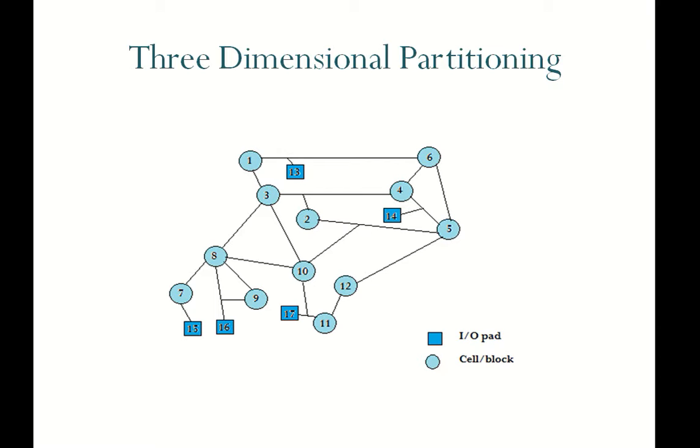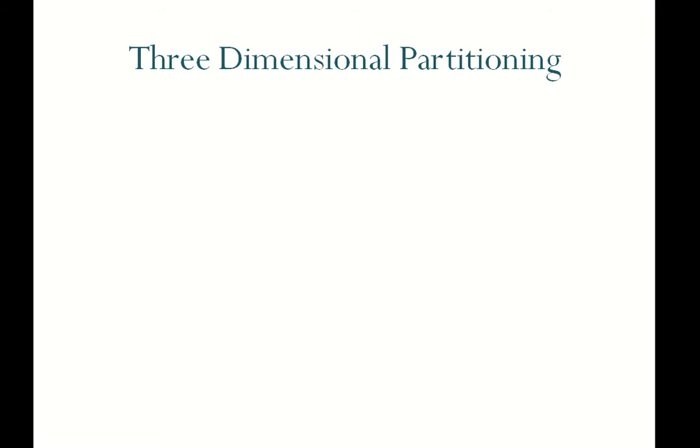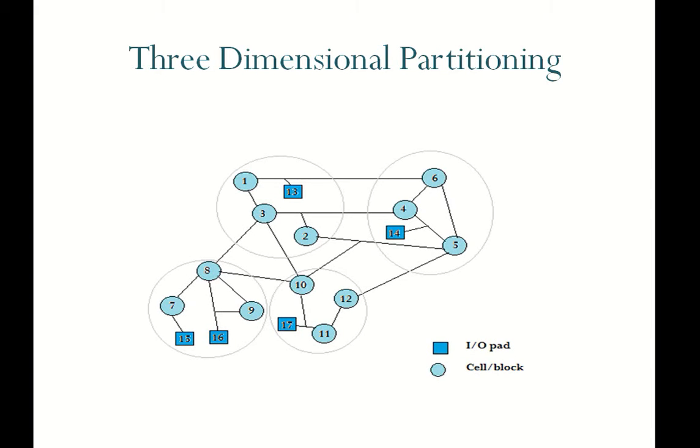Now with the help of any kind of partitioner, we partition the given netlist into subgroups or subparts with considering some constraints like minimization of interparts connection, area balancing etc. So here we have 4 subparts as shown in the figure.